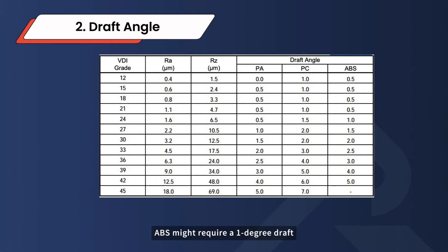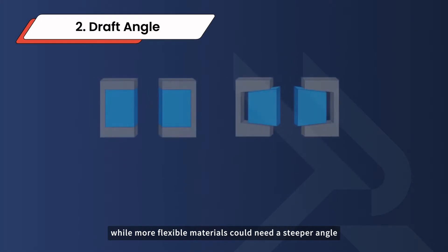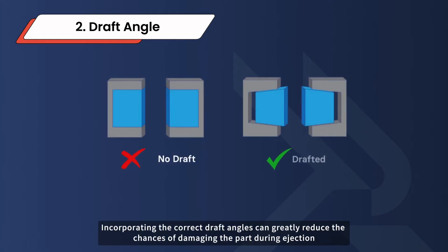For instance, ABS might require a 1 degree draft, while more flexible materials could need a steeper angle. Incorporating the correct draft angles can greatly reduce the chances of damaging the part during ejection.